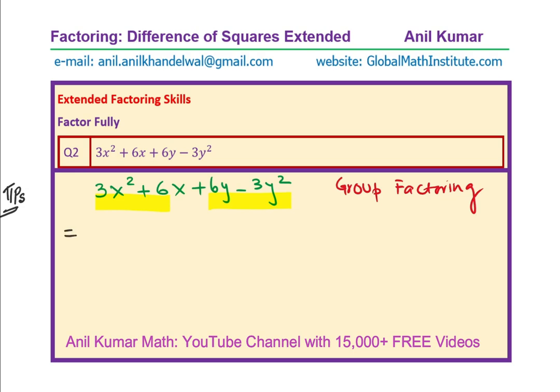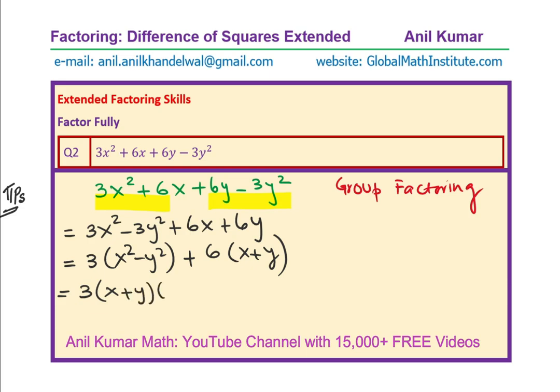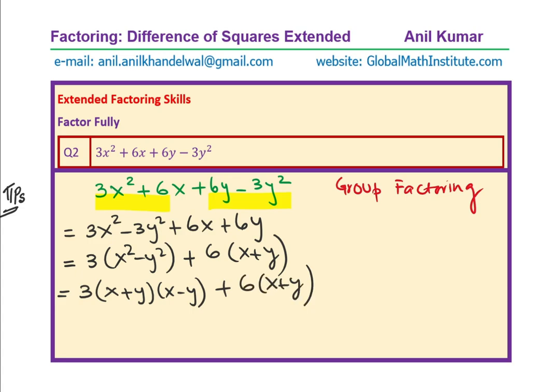What I did is that I'll rearrange this: 3x² - 3y² + 6x + 6y. You see that? And now, I can factor 3. I get 3(x² - y²) and here I can factor 6. I get 6(x+y). Now, how will you factor? Do you see some common factors? Well, 3 and 6 will give me 3 as a common factor. But look here, we have a difference of square. So, I could write this as 3(x+y)(x-y) and we have 6(x+y).